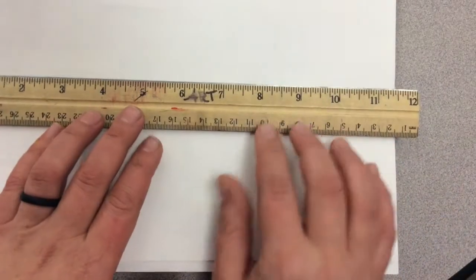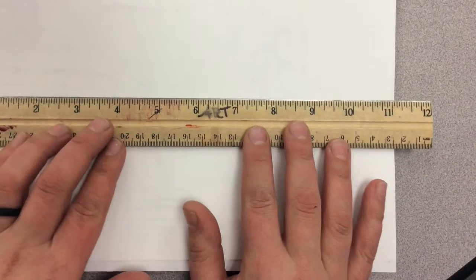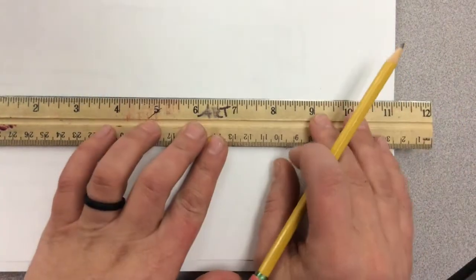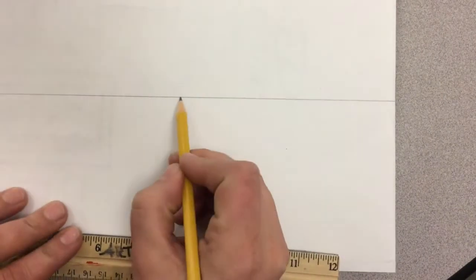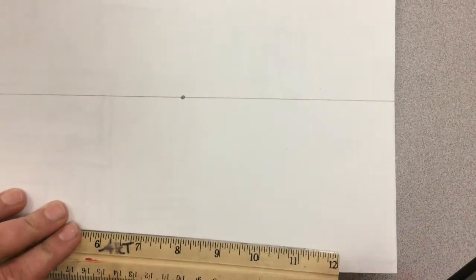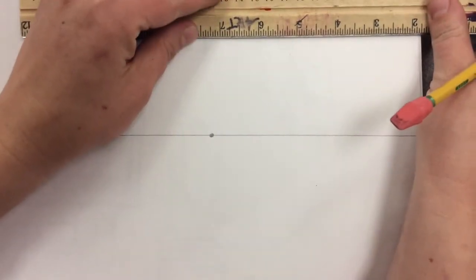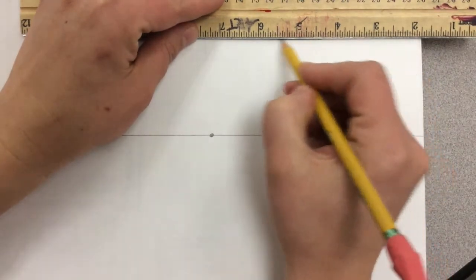So flip open to a new page in your sketchbook and line your ruler up horizontally, and we're going to start by drawing our horizon line. Then I'm going to place a vanishing point in the middle here, although you can place the vanishing point anywhere you want on the horizon line.